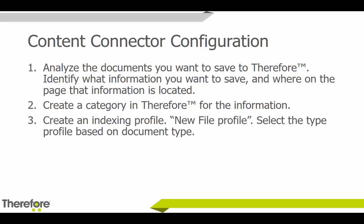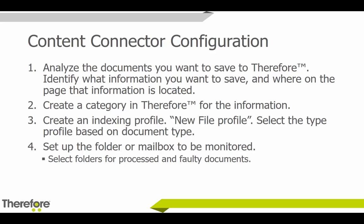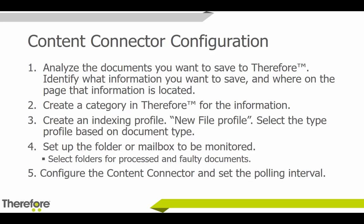Then you create an indexing profile and select the profile based on the document type. Next, you set up the folder or mailbox to be monitored, and you want to create folders for processed and faulty documents. Documents processed by the Content Connector can be moved to the processed folder or deleted from the original source. Most importantly, you also want a folder for faulty documents — in case any documents cannot be processed, the Content Connector will not delete them, and there'll be a folder where you can check what information wasn't saved. Finally, you configure the Content Connector and set the polling interval — the amount of time between checks. The standard is every 10 minutes.